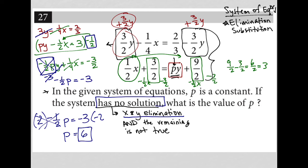So six is my P value. It allows for both X and Y to eliminate. The remaining is not true. Let me make sure you see it clearly. I would have three Y minus one fourth X equals two thirds. And I would have, instead of negative one half PY, I'd have negative three Y plus one fourth X equals negative three.